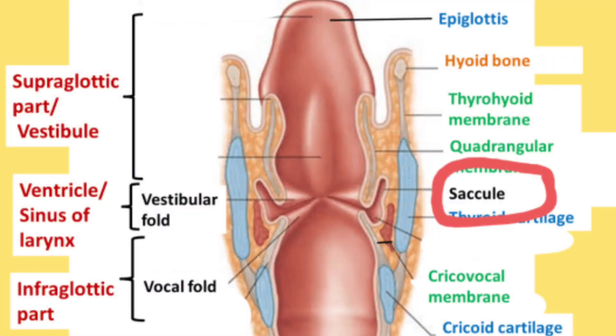The anterior wall of the larynx is therefore longer than the posterior wall. The interior of the larynx is divided into three parts: the upper part called the vestibule of the larynx, then the middle part which is the sinus of the larynx, and the lower part called the infraglottic part. These three are the important parts of the interior of the larynx.